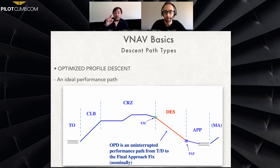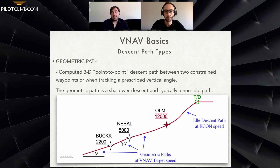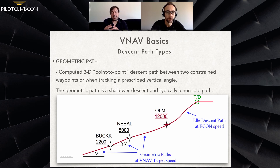The performance path optimizes the descent — it's an uninterrupted performance path from top of descent to the final approach fix. The geometric path is different: it's a computed 3D point-to-point descent path between two constrained waypoints, or when tracking a prescribed vertical angle. The geometric path is shallower and typically a non-idle path — roughly 1,000 feet per mile — following a descent but not as economically efficient as an idle descent, because there are constraints to respect.